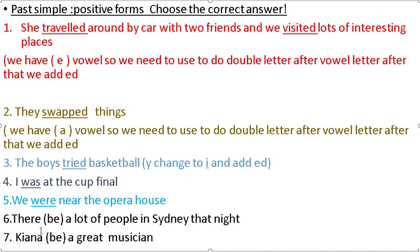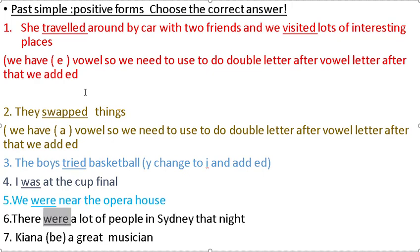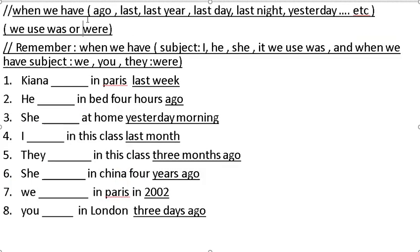There were a lot of people in Sydney that night. For 'Kiana be a great musician': subject she — change 'be' to 'was.' Kiana was a great musician.